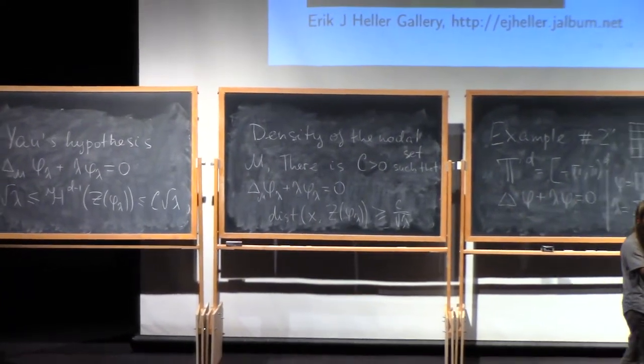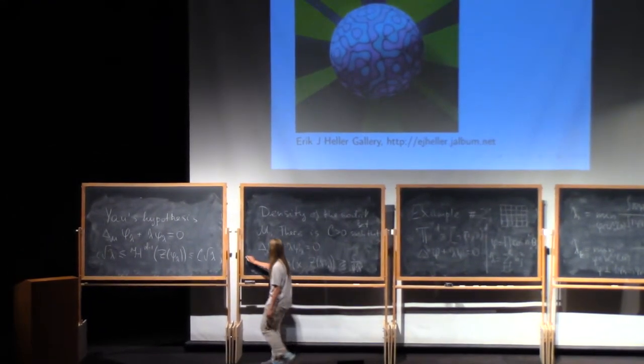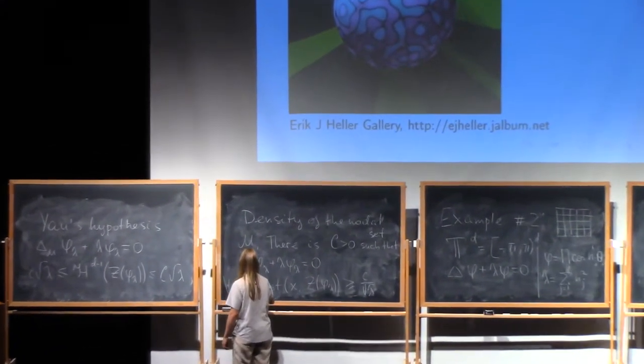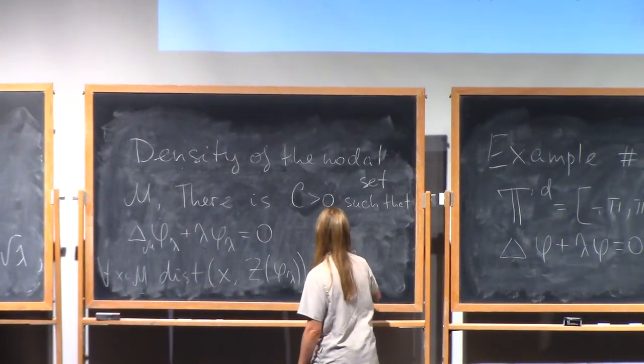Which points x is this described? It's for any x on the manifold. It should be smaller because it could be zero. Sorry. Thank you. Sure.